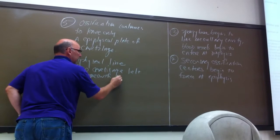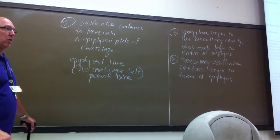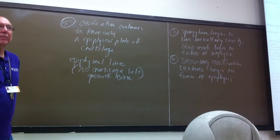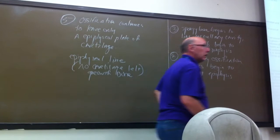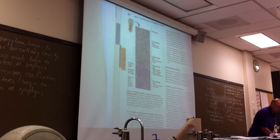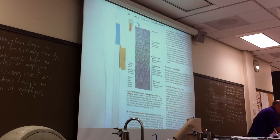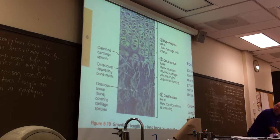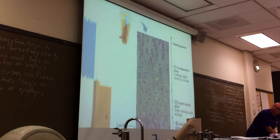If you get to that stage and you're only 5'2" and you want a career in the NBA, think about accounting — you're done growing. How does it occur? If you turn the page, look at this figure right here. This is showing you different zones of cartilage and what is going on in terms of active ossification.